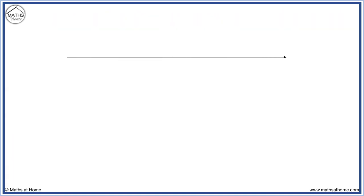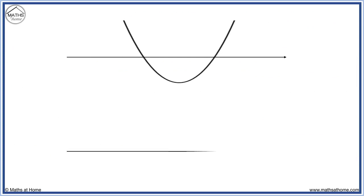For example, sketch the derivative of this graph. We first mark the turning point. There is a zero directly in line with this on our derivative graph, so we make a point on the axis.